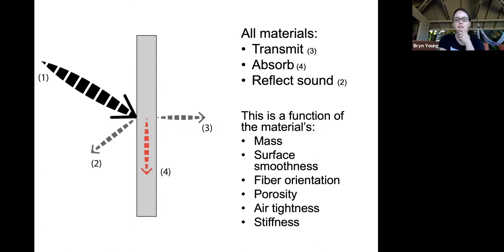And then stiffness. Stiffness would be, again, like a wall assembly, and depending on how stiff it is, that will also determine how much sound is being reflected or transmitted.